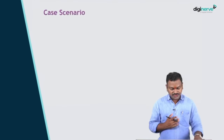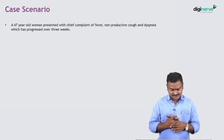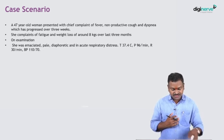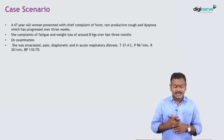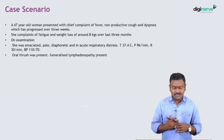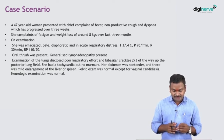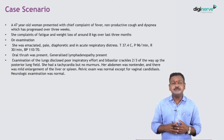Let's begin with a case scenario. We have a 47-year-old woman complaining of fever, non-productive cough, and dyspnea over the past three weeks, with fatigue and weight loss of around 8 kg over the last three months. On examination she is emaciated, pale, diaphoretic, and in acute respiratory distress. Temperature is 37.4°C, pulse 96/min, respiration 30, BP 110/70. Oral thrush and generalized lymphadenopathy are present.